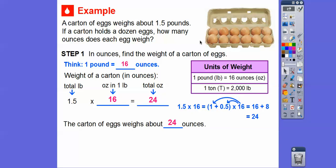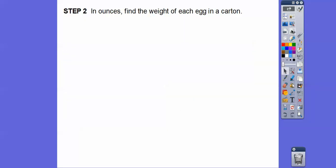That's not the answer to the question, because it's asking how many ounces does each egg weigh. That's for the whole carton. This is all of them. There's 12 eggs that weigh 24 ounces, so we're going to have to convert that. In ounces, find the weight of each egg in the carton. Remember, a carton, which is a dozen, equals 12 eggs.